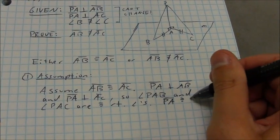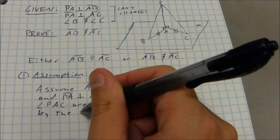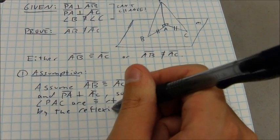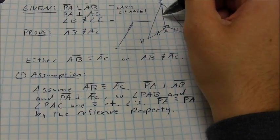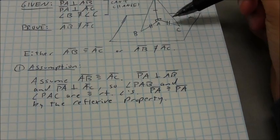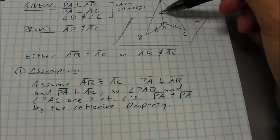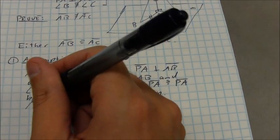PA is congruent to PA by the reflexive property. So I can mark that congruent. And now you can see that according to the labelings, I proved these two triangles congruent by angle side angle.